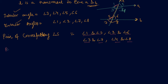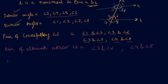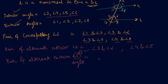Now let me write the pair of alternate interior angles. The interior angles are 3, 4, 5, 6. Alternate means they are on opposite sides: angle 3 and angle 6 are alternate interior angles, and angle 4 and angle 5 are a pair of alternate interior angles. Similarly, the pair of alternate exterior angles: the exterior angles are on the opposite side, so angle 1 and angle 8, and angle 2 and angle 7 are the pairs of alternate exterior angles.